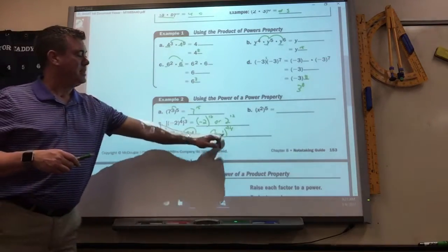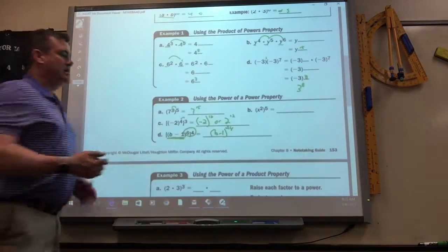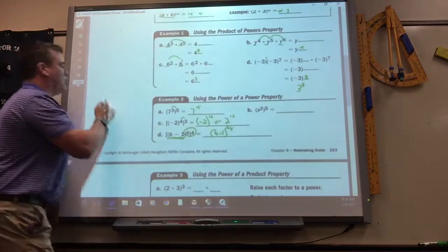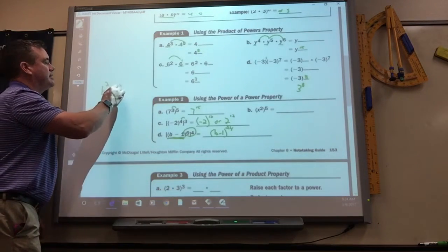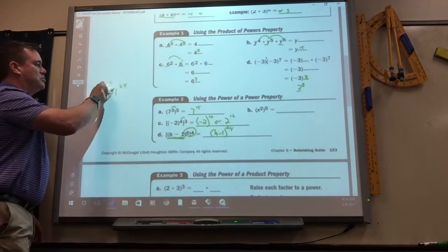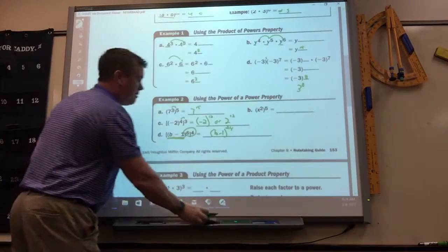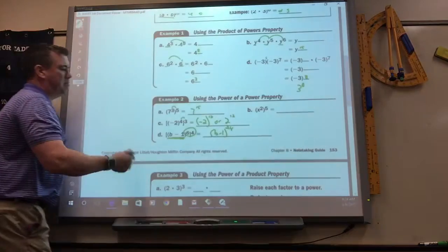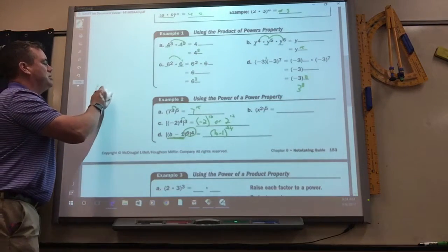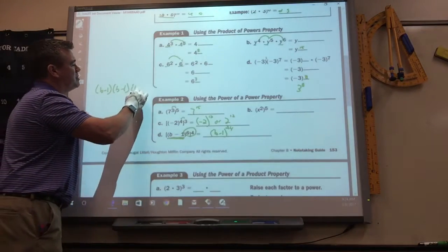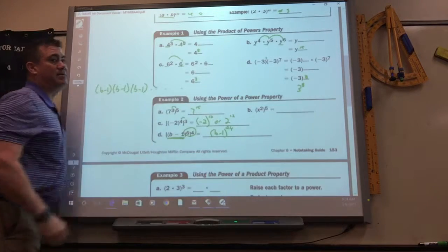Now this is different. See, they're not multiplied together. B minus 1 to the 24th, some people might write it like that. But you can't. If they're not multiplied together, B minus 1 to the 24th means you take B minus 1 times B minus 1 times B minus 1, 24 times.